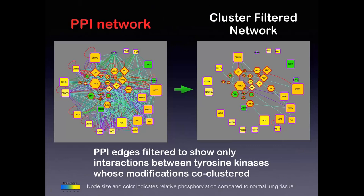To illustrate the cluster-filtered network, here are all the tyrosine kinases in the dataset on the left. Node size and color indicate relative phosphorylation compared to normal lung tissue, and all edges are shown — protein tyrosine kinases are well studied so there are many known interactions. If we filter out all except those whose modifications co-cluster, we have far fewer edges, focusing in on interactions that are likely occurring based on the modifications in these lung cancer cell lines.